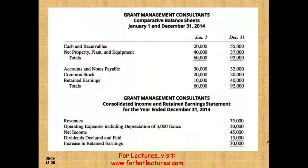This is the company we are working with — it's a Swiss company. These are their numbers: their prior-year balance sheet, their current-year balance sheet, and their current-year income statement. Hopefully you are familiar with this example because we worked through it when we did the current method.